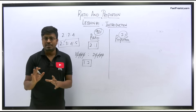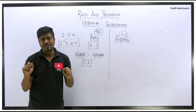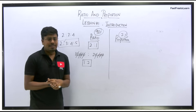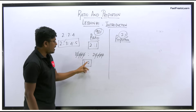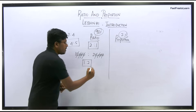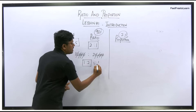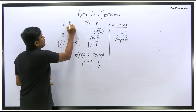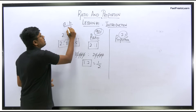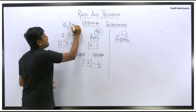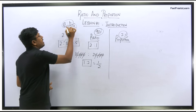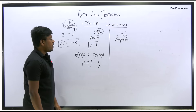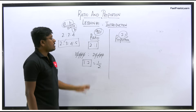So comparing two or more values and representing the result is called a ratio. The ratio 1:2 can also be written as 1/2. In general, a:b can also be written as a/b — both are the same.